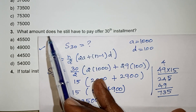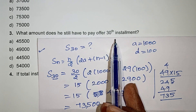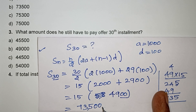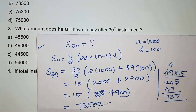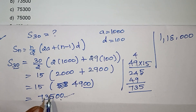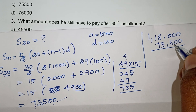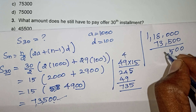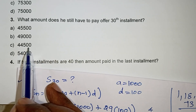Look at the next question: what amount does he still have to pay after the 30th installment? Up to the 30th installment he paid 73,500. The total loan amount is 1 lakh 18,000. So after the 30th installment, the remaining amount = 1,18,000 − 73,500 = 44,500 rupees. So 44,500 is the correct answer, that is option C.